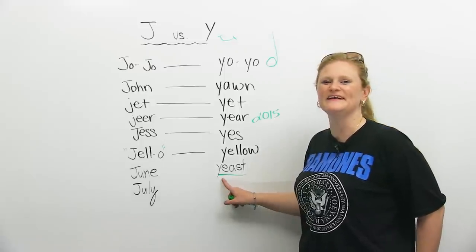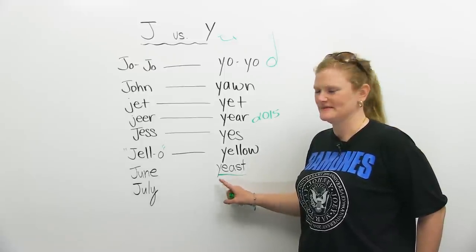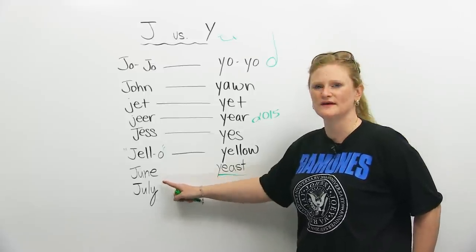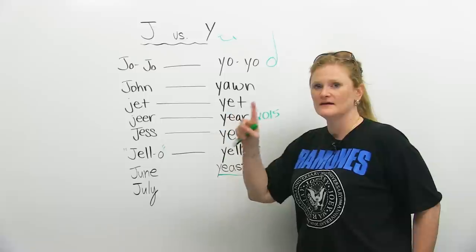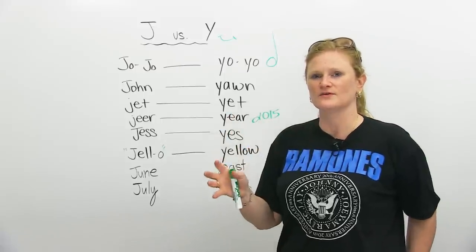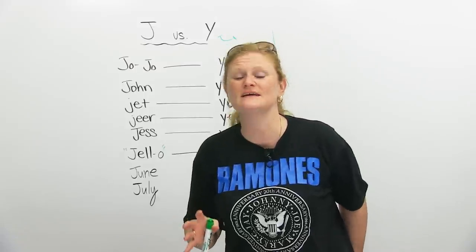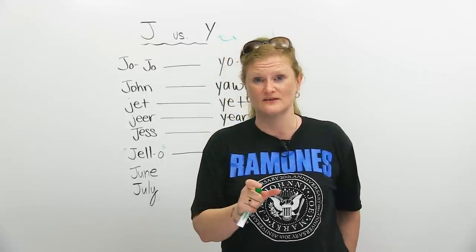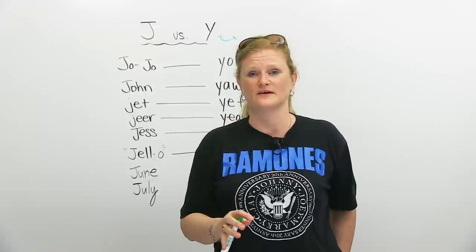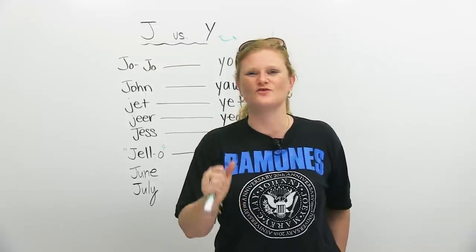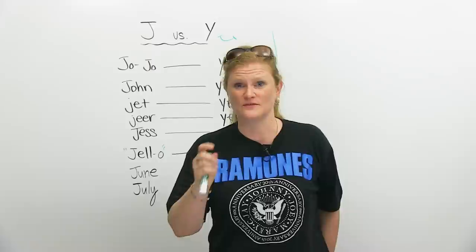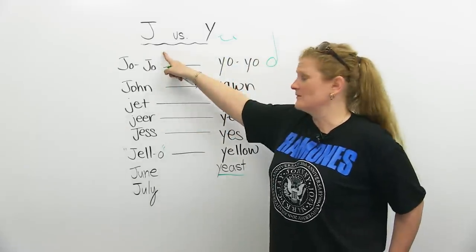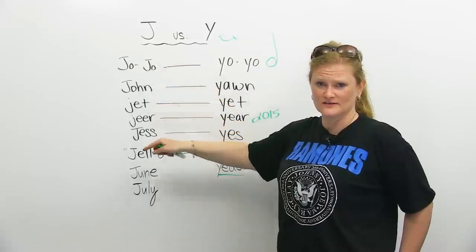Then we have yeast. The J words — June and July. If you have any other pronunciation problems, please go to my Facebook, which is Ronnie McEnglish, or hit me up on the website. I will be happy to try and help you figure out more of your pronunciation problems. From JoJo, John, and Jess, we're out of here.